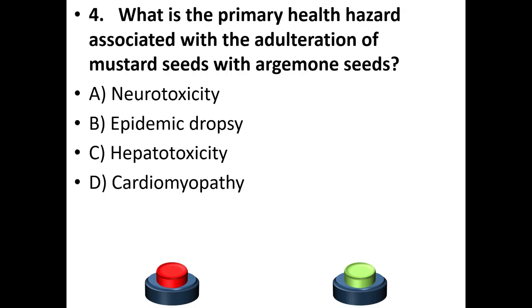Fourth question: What is the primary health hazard associated with the adulteration of mustard seeds with argemone seeds? A. Neurotoxicity. B. Epidemic dropsy. C. Hepatotoxicity. D. Cardiomyopathy. Your answer is option B: Epidemic dropsy, as we have discussed earlier.